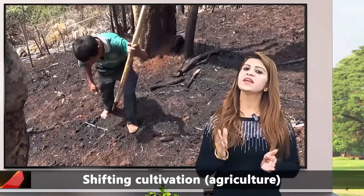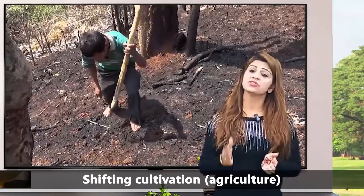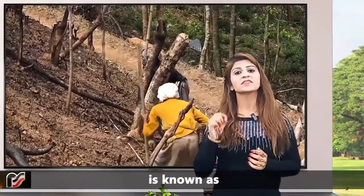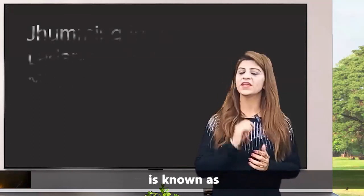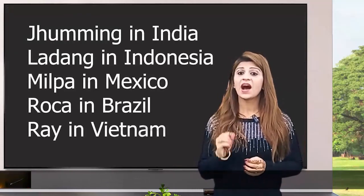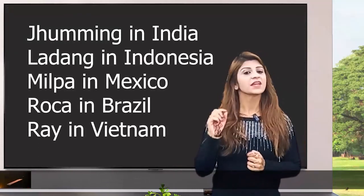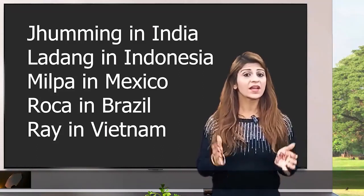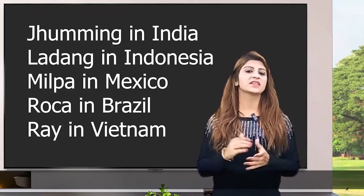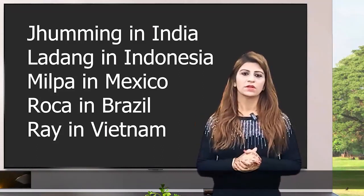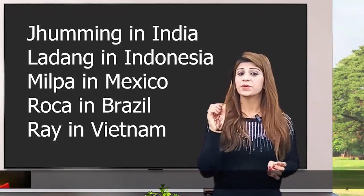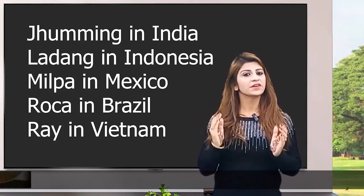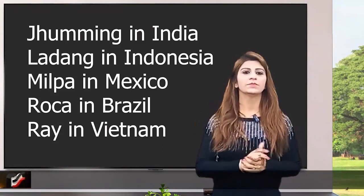Shifting cultivation is known as 'jhuming' in India, 'ladang' in Indonesia, 'milpa' in Mexico, 'roca' in Brazil and 'ray' in Vietnam.